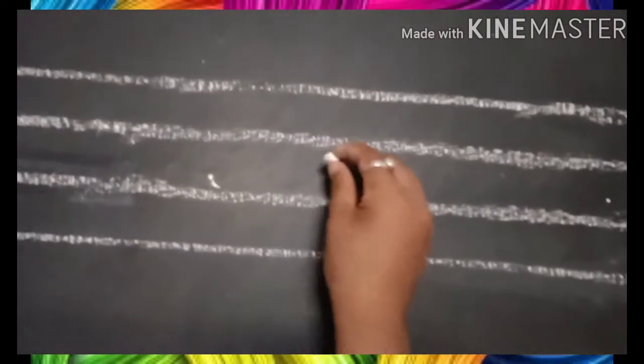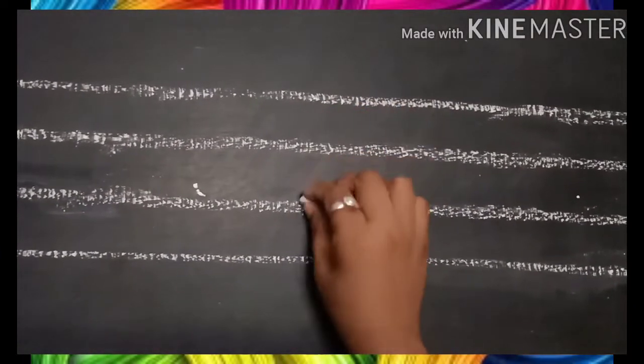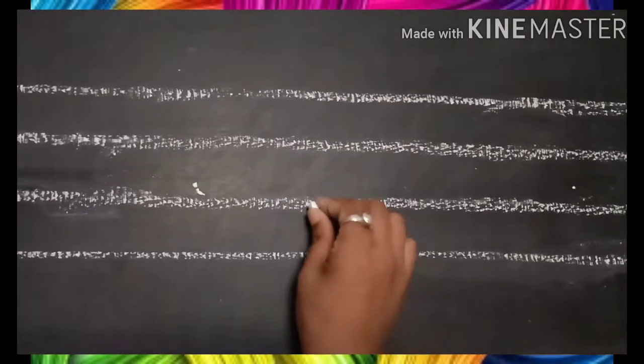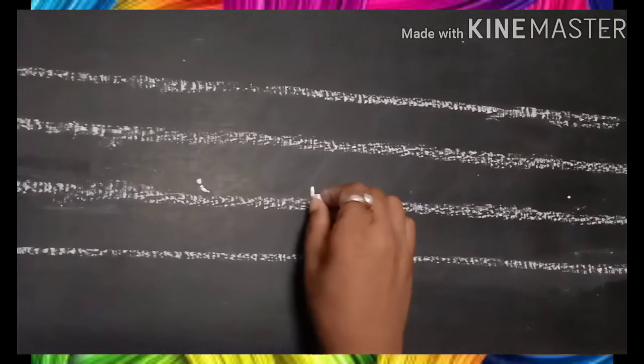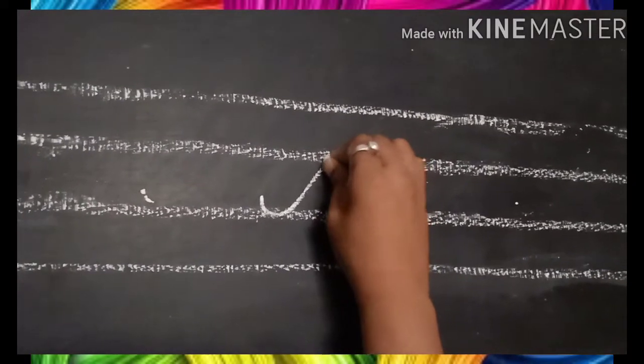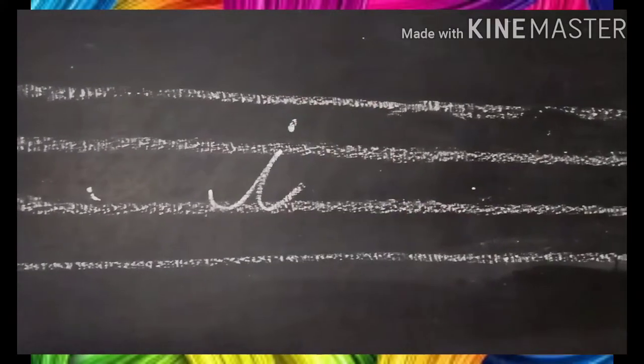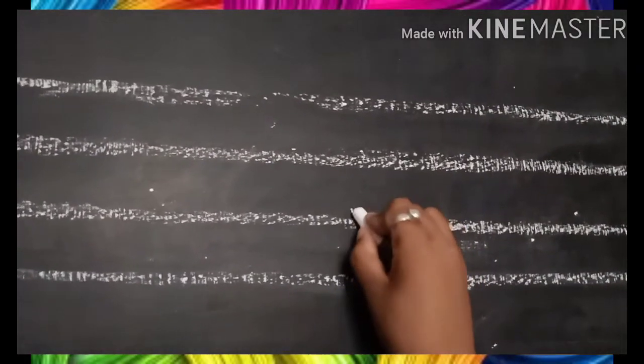Yes children, come. Cursive small letter 'i'. So cursive small letter 'i' — children, we use these two lines, isn't it? So let's start. Start from the second middle line, go slantingly towards the first middle line. See children — small letter 'i'. Again children, you will start from the second middle line.